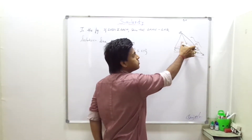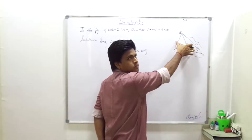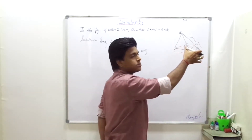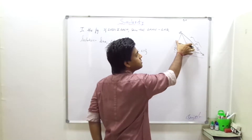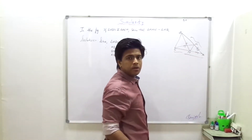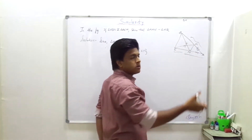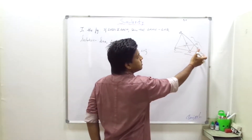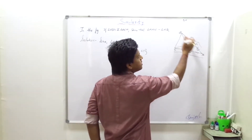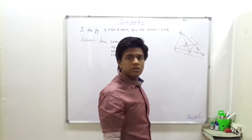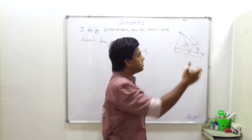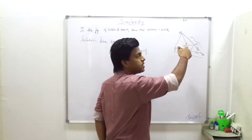So these two are parallel and the other one — if these two are parallel, we come back to BPT. So A, M, N and A, B, C are similar. At least BPT shows they are parallel.